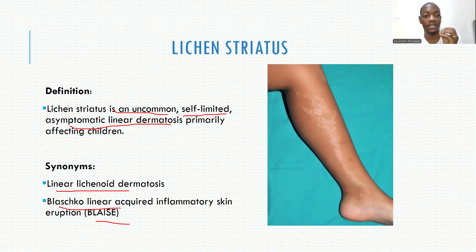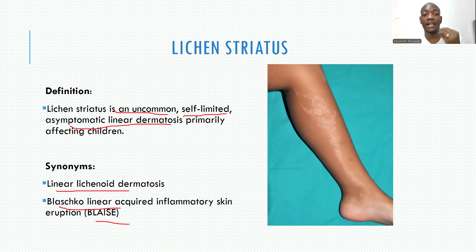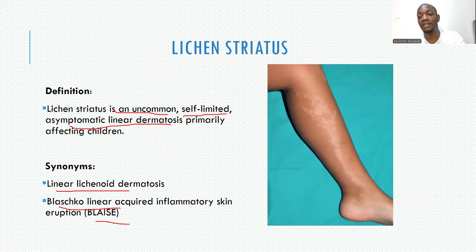These synonyms describe the condition well. 'Blaschko' means the condition follows the Blaschko lines of development. 'Linear acquired' means it comes on after birth — someone is born normally and then later develops this skin disorder. 'Inflammatory' means there is some inflammation in the skin, and 'skin eruption' means something like a rash.